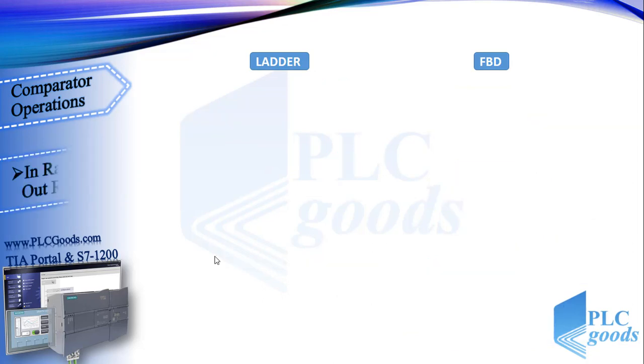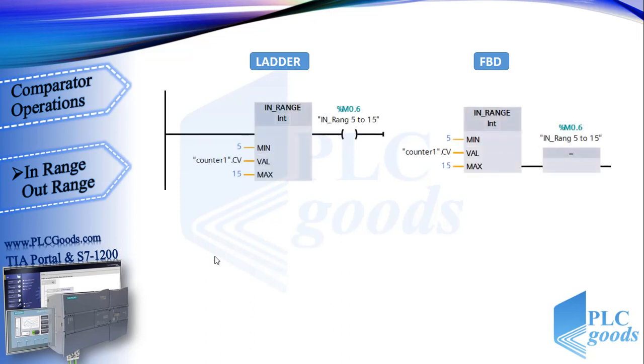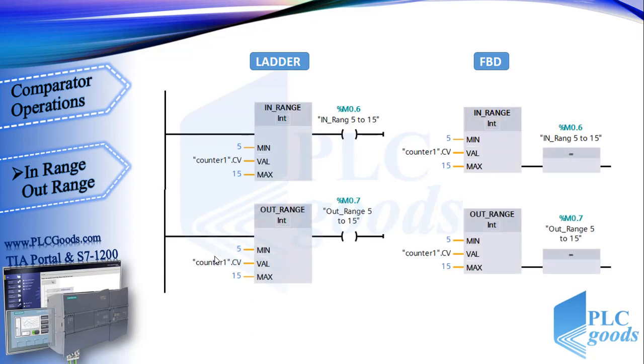Well, here we have in range and out range instructions. At the first line, when the counter value is a number from 5 to 15 - I mean 5, 6 to 15 - the output will be on. The out range instruction works inversely. At the second line, the output will be on if the counter value is not a number from 5 to 15.